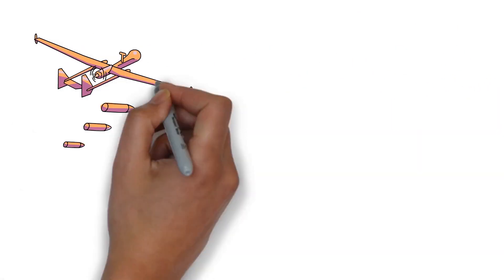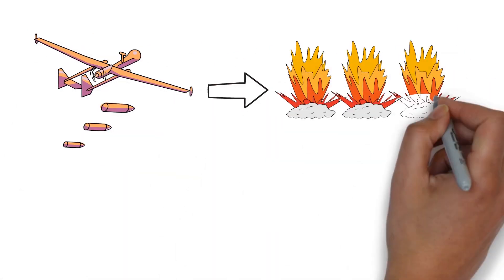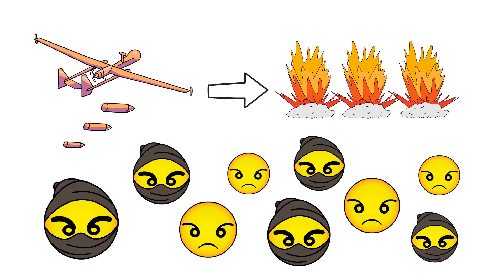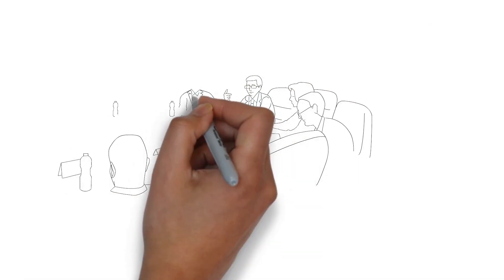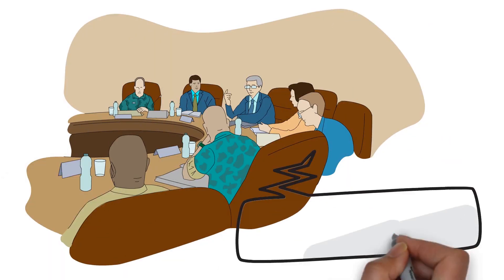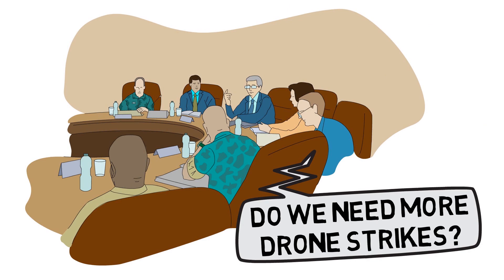So U.S. drone strikes seem counterproductive. They actually increase terrorism. We hope this research informs policy makers and those interested in learning more about what drone strikes actually do.